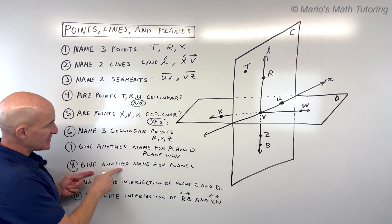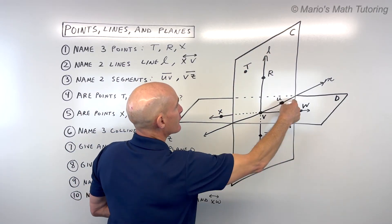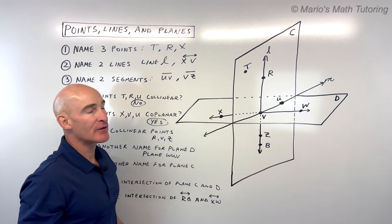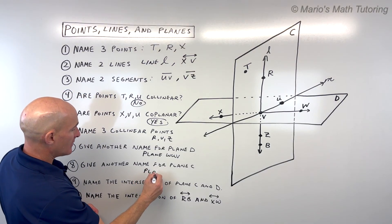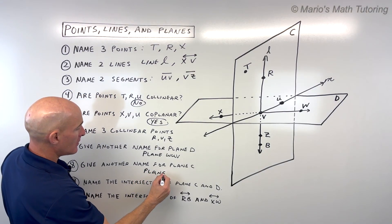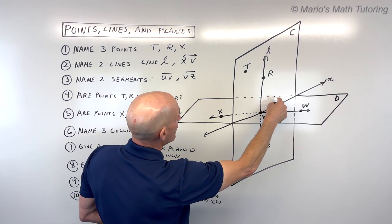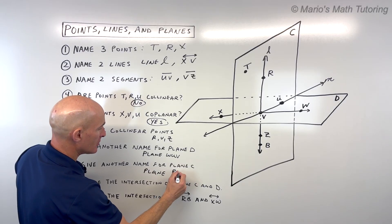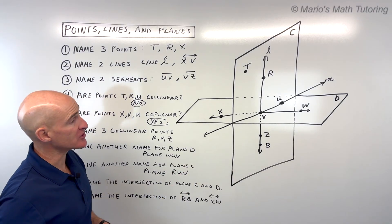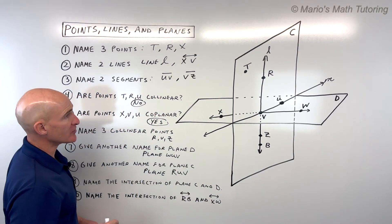For number eight, give another name for plane C. Here's plane C, this vertical plane. I'm going to pick three points that are not in a straight line. Let's say maybe R, U, and V. Those are in the plane and they're not collinear. There's others. You could say plane BRT, or ZRT.